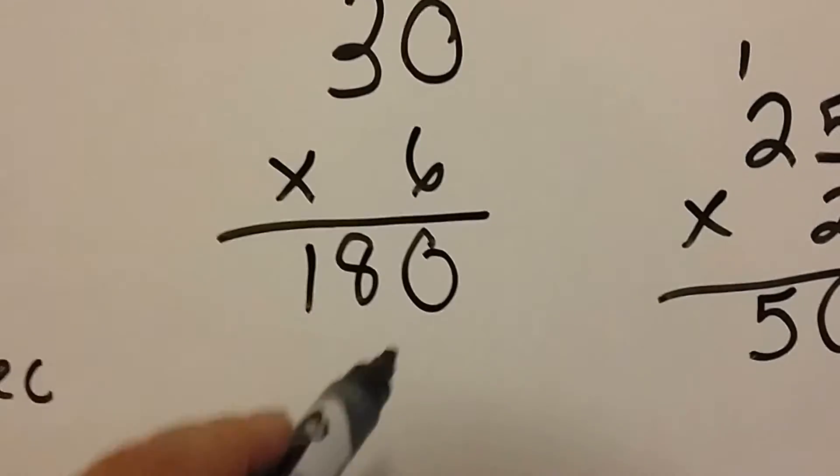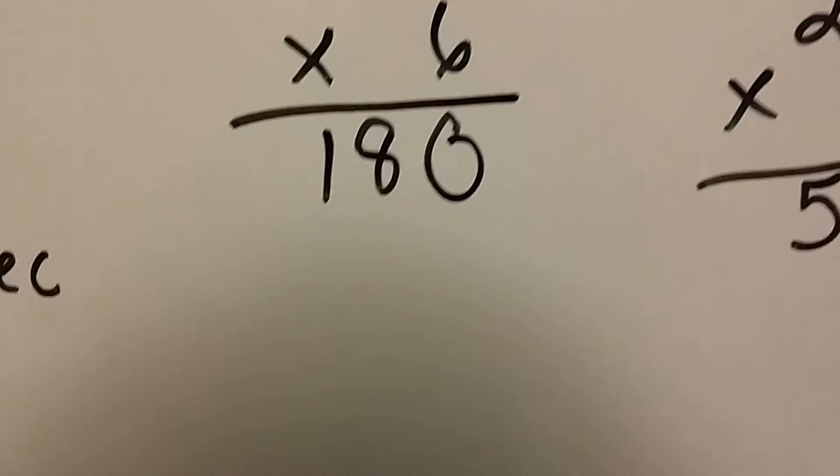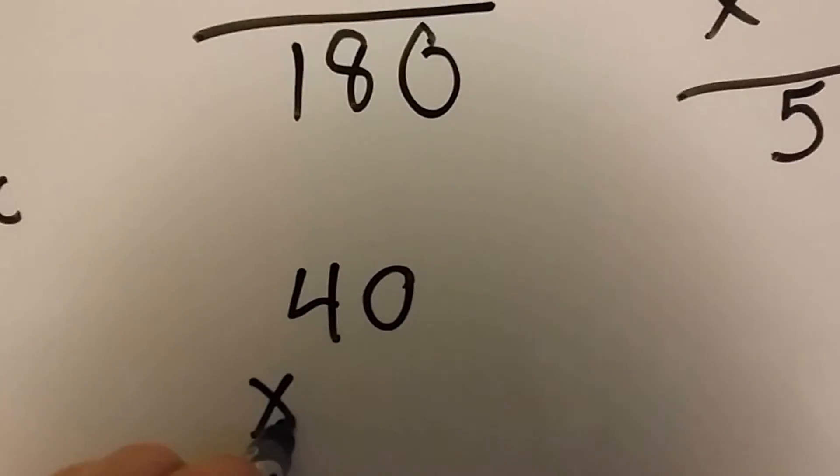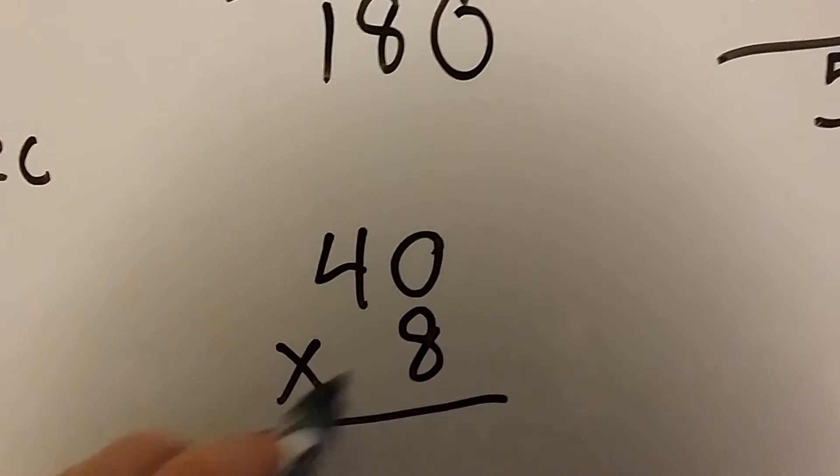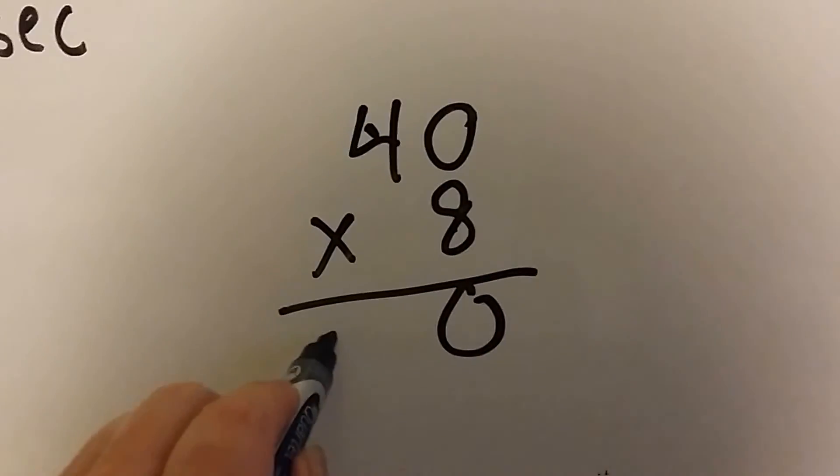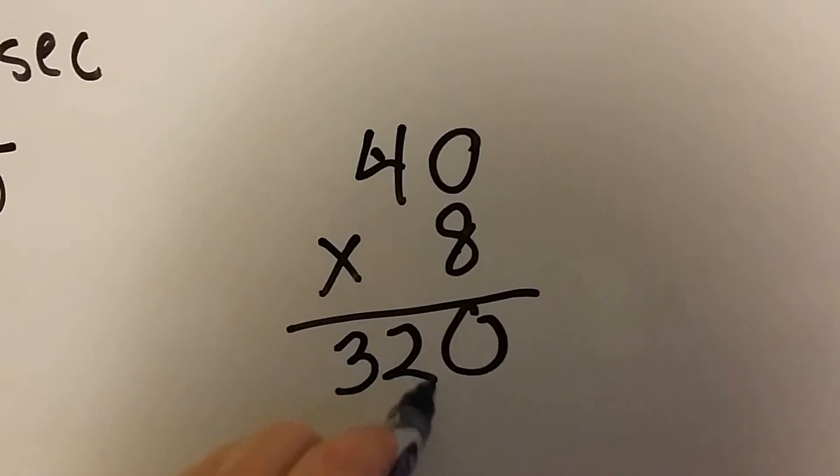So all we're doing is just two-digit multiplication to a one-digit. If we had 40 times 8, we'd have 8 times 0 is 0, and 8 times 4 is 32.